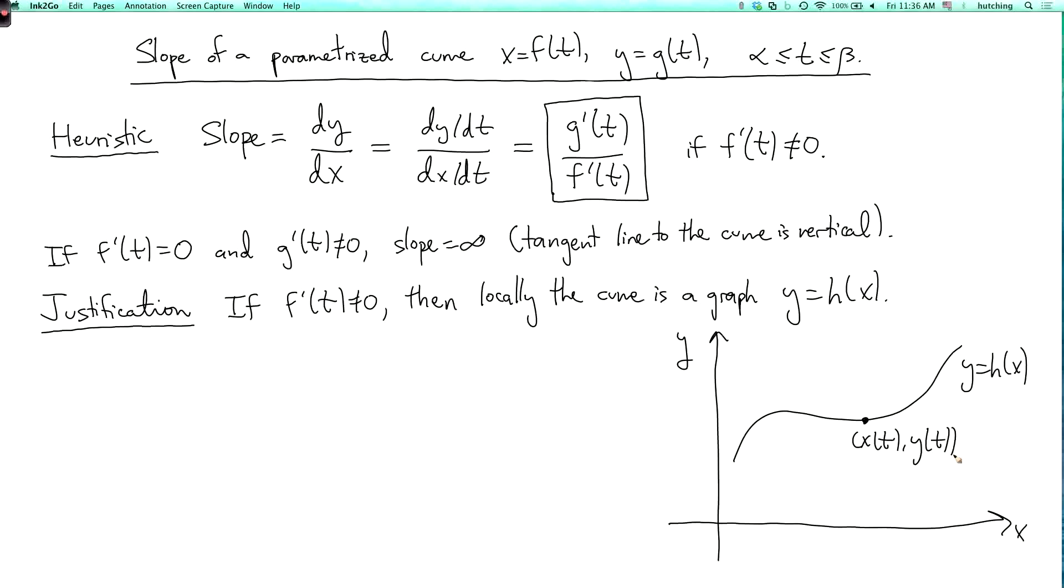Now the whole curve might not be a graph, but at least for t close to this particular t that we're interested in, it's going to be a graph because it's always going to be moving to the right.